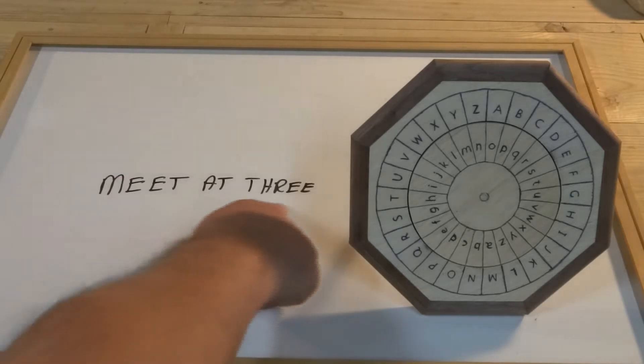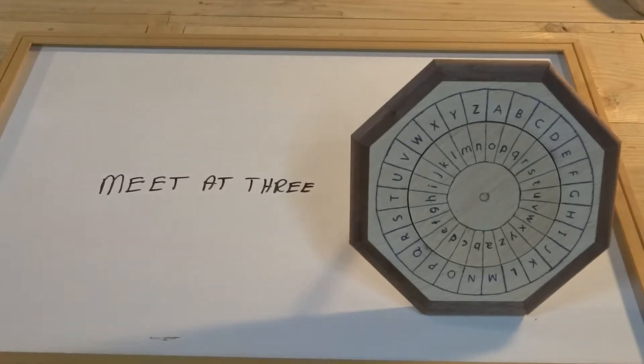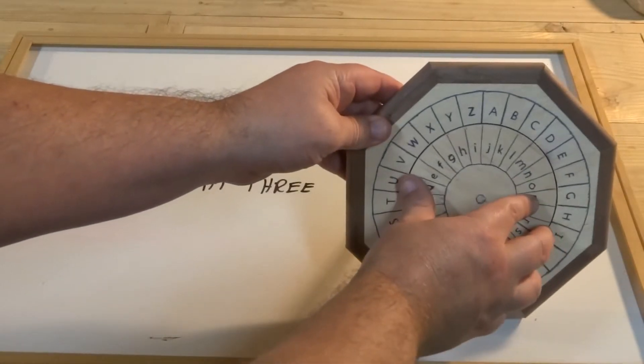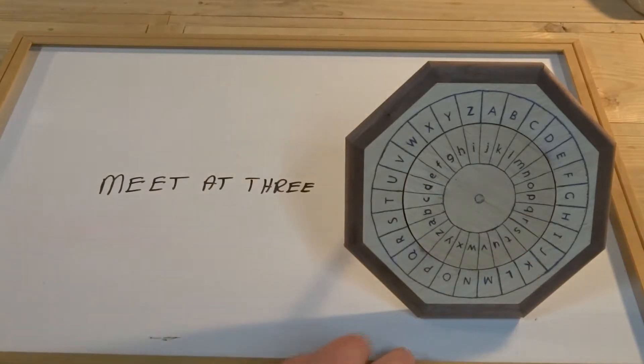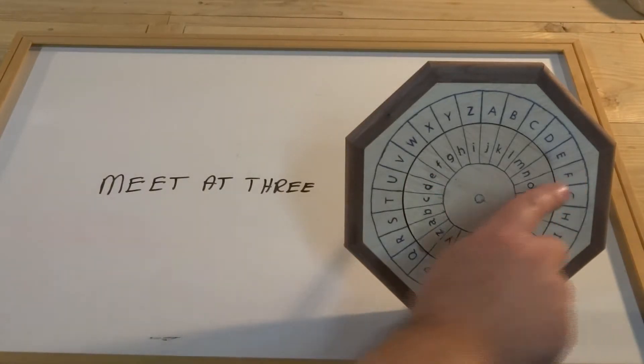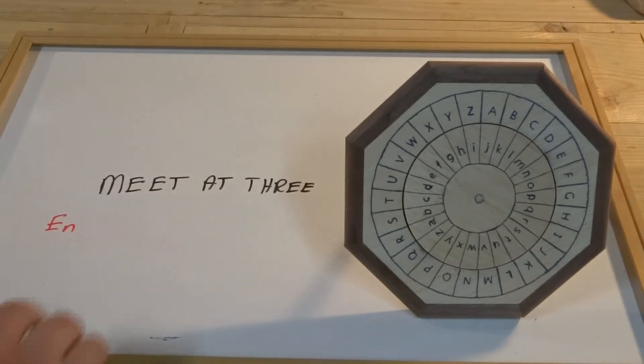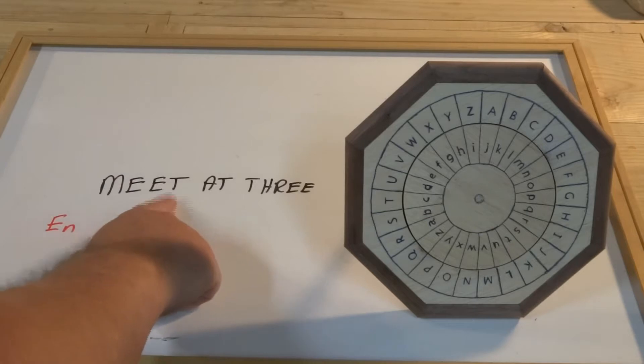So we've got a new message here, Meet at 3, and we're going to encode that with a couple of different wheel settings. So just like before, we'll turn our wheel a bit, we'll pick an index, for instance, how about if I use E and N, and then we write that down, same as before. And then we start to encode our letters.